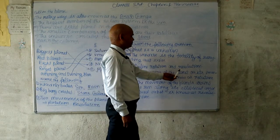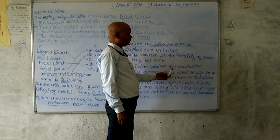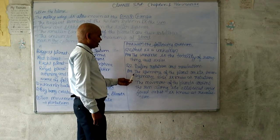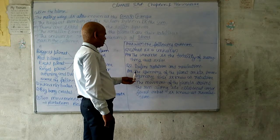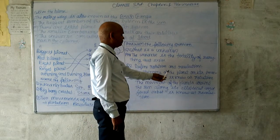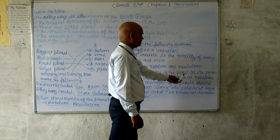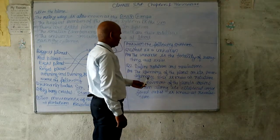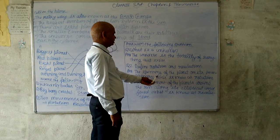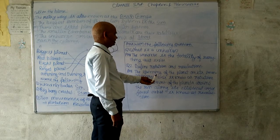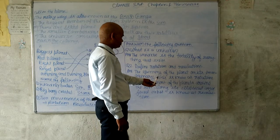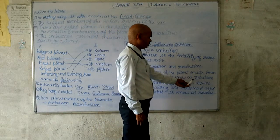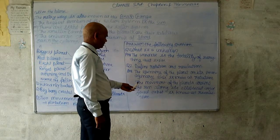Define Rotation and Revolution. Rotation क्या है और Revolution क्या है — इसको define करना है। Answer: The spinning of the planet on its imaginary axis — planet का अपने imaginary axis पे घूमना — this is known as Rotation.